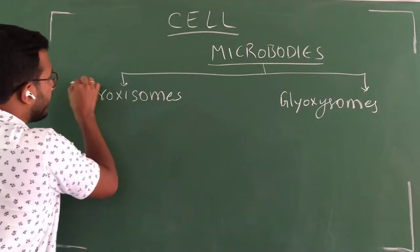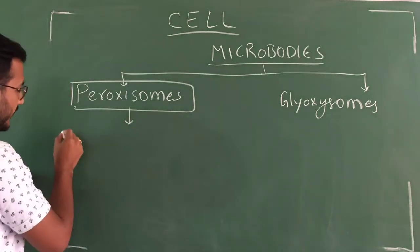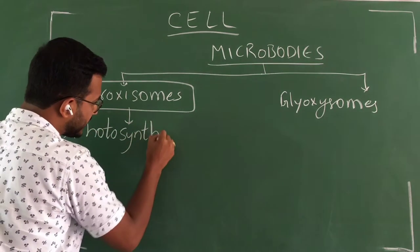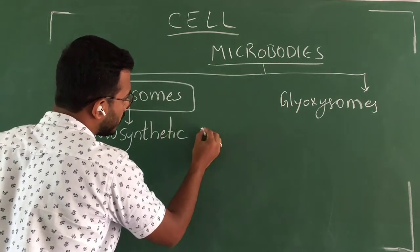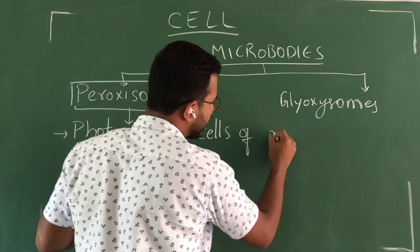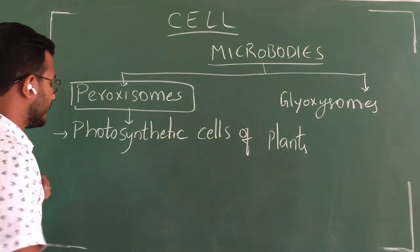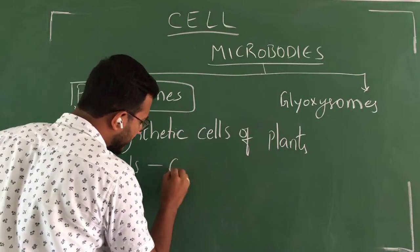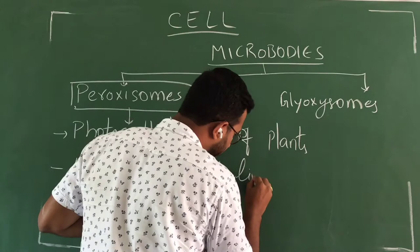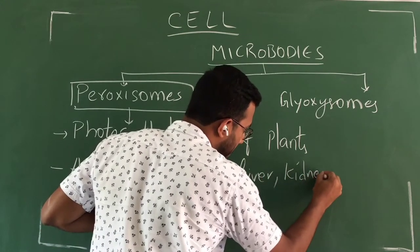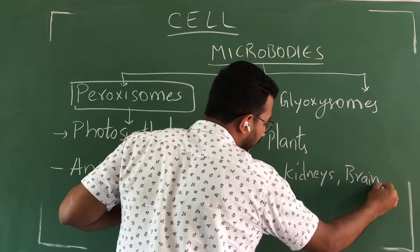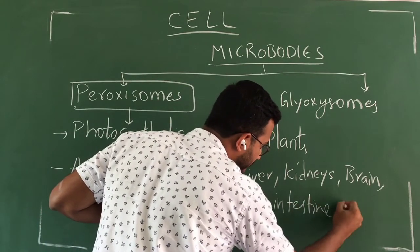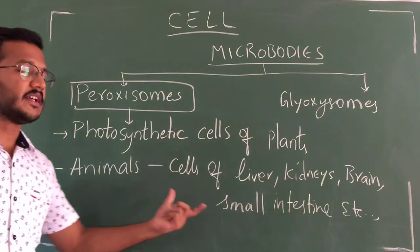Now dealing with peroxisomes, we need to know where they are present. They are present in the photosynthetic cells of plants. In animals, they are present in the cells of the liver, kidneys, brain, and small intestine.